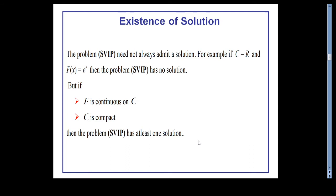It is not necessary that the variational inequality problem will always possess a solution. A simple example: if C = R and F(x) = e^x, then the inequality e^x · (y − x) ≥ 0 for all y in C will never be satisfied. However, if F is continuous on C and C is compact, these two conditions are sufficient to guarantee that the VIP has at least one solution.